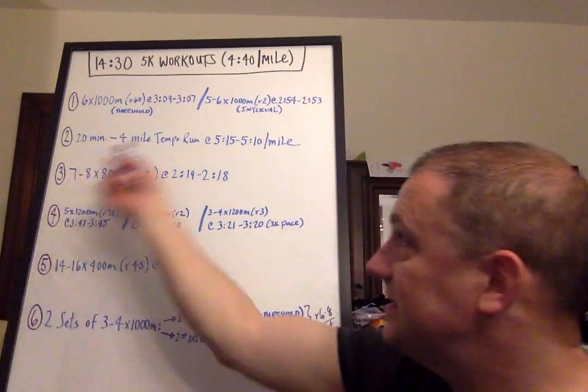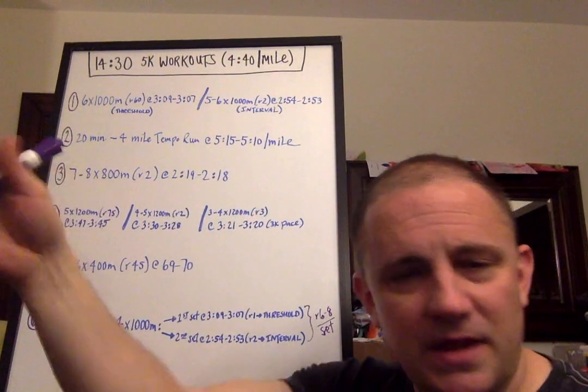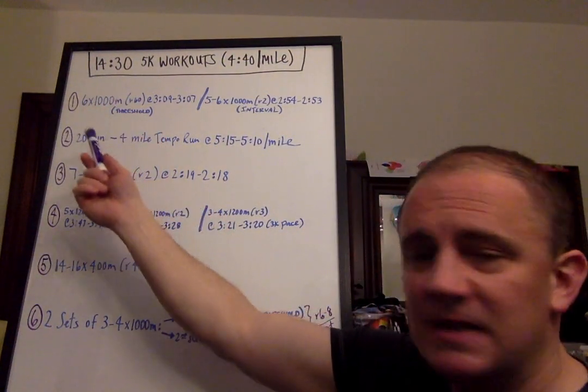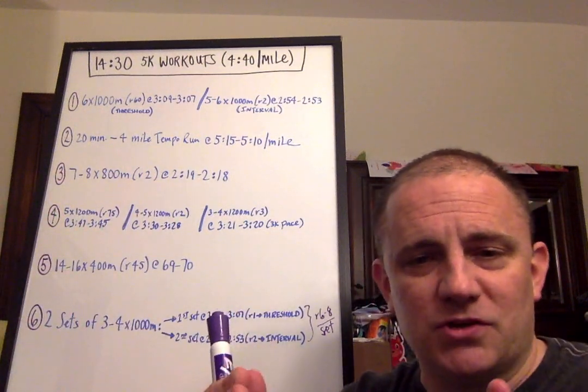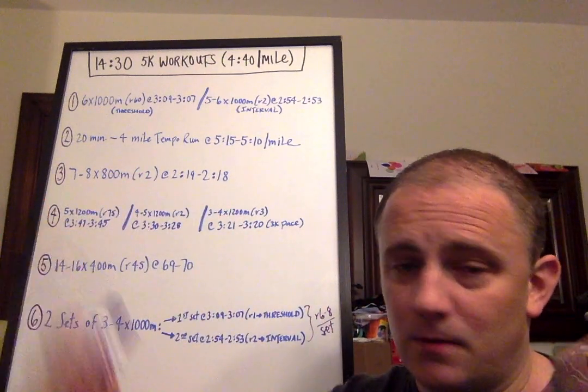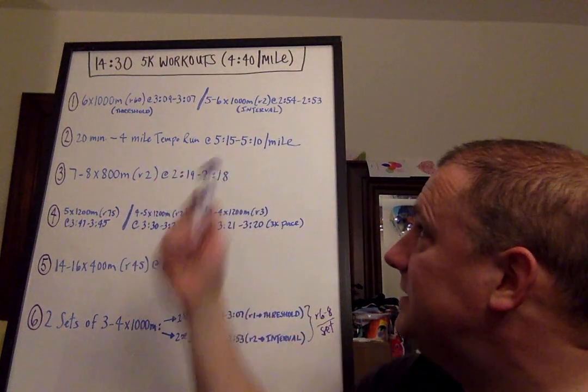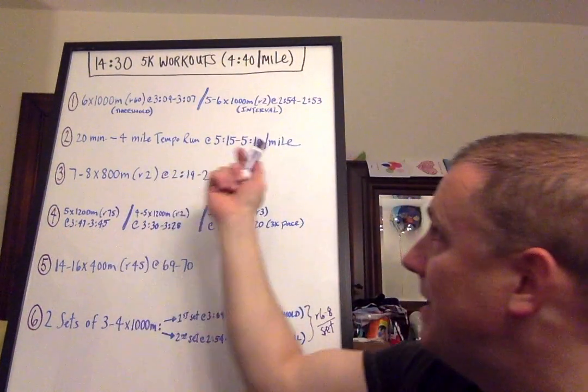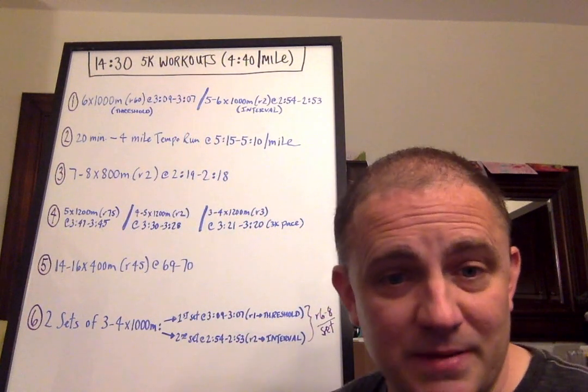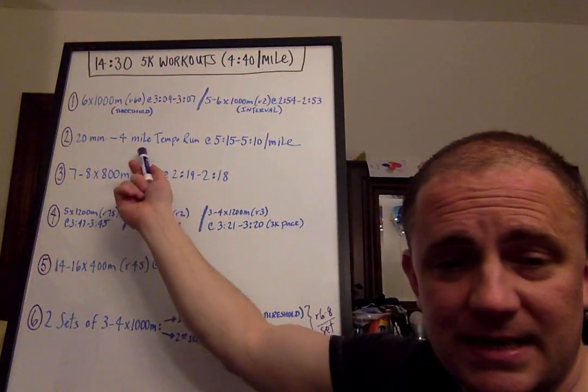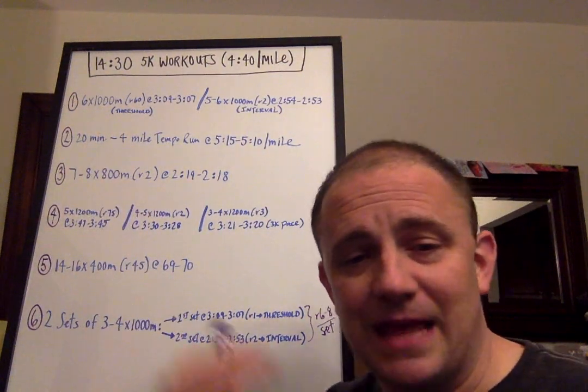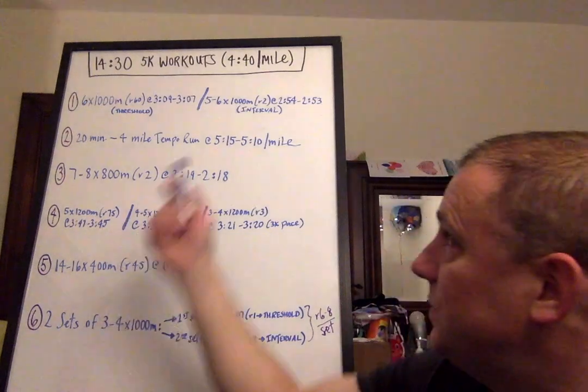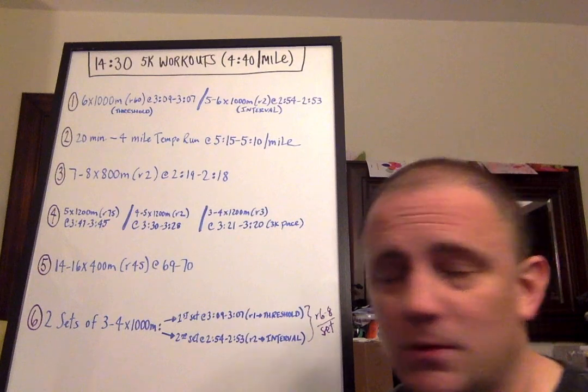Workout two, this is a constant I recommend for everybody training for a 5K. It's building towards a 20 minute to a four mile continuous tempo run at 5:15 to 5:10 per mile. These are anaerobic threshold tempo runs. I would not exceed 25 minutes for this anaerobic threshold run. At that point, it can start to become counterproductive. You might have athletes who can get in a little under five miles at that particular pace.